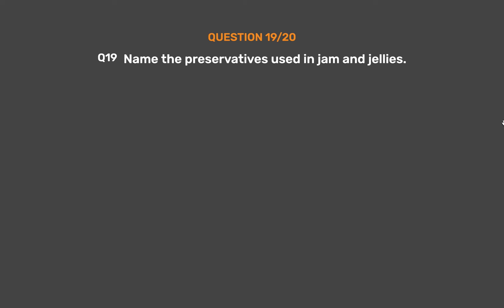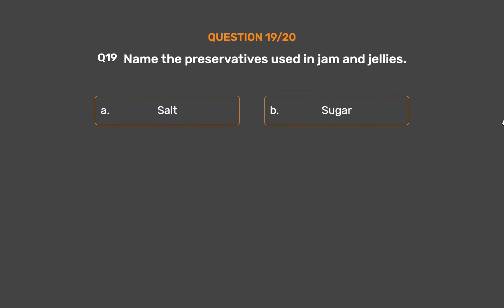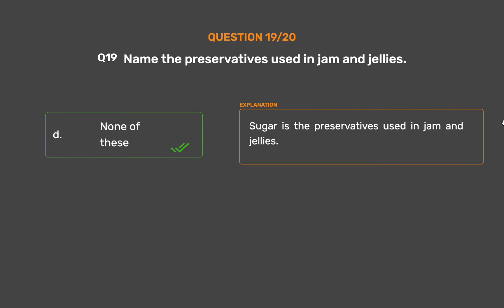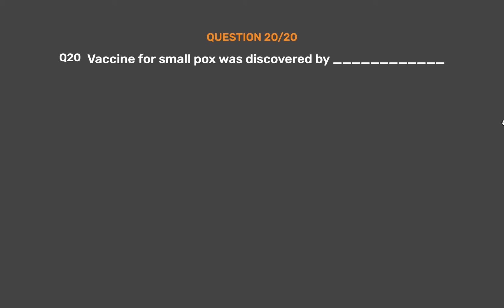Question number 19. Name the preservative used in jam and jellies. Option A: Salt. Option B: Sugar. Option C: Oil. Option D: None of these. The correct answer is Option D, None of these — though sugar is the preservative used in jam and jellies.